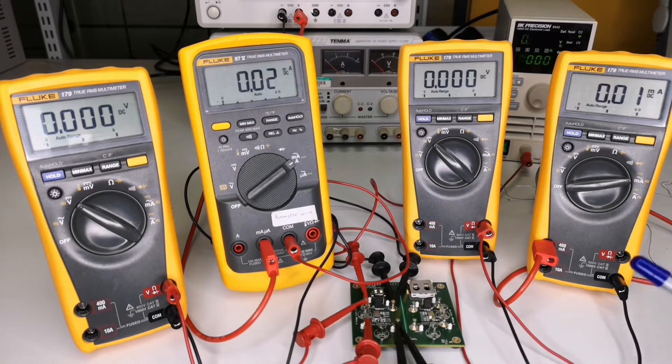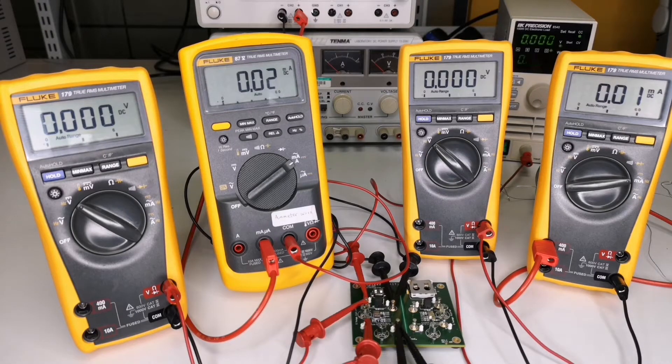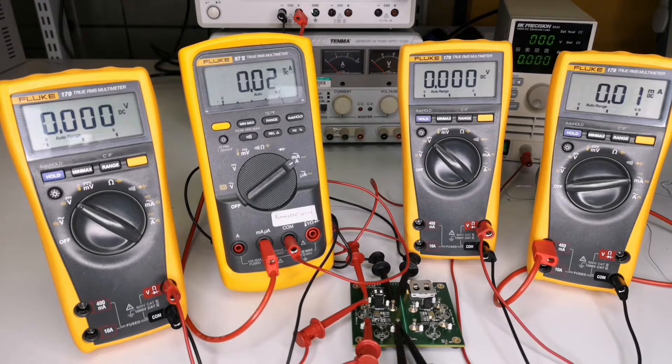I've connected the output of the EVKit to a programmable electronic load, which has been set to draw a fixed current of 6 milli amperes. Let's turn the power supply on and see what happens.